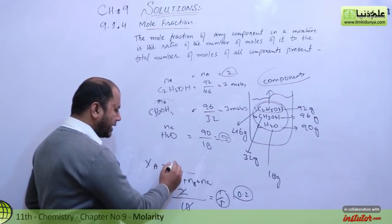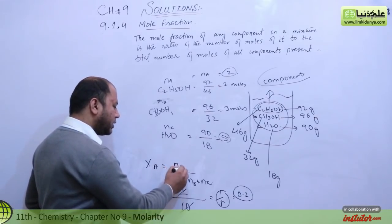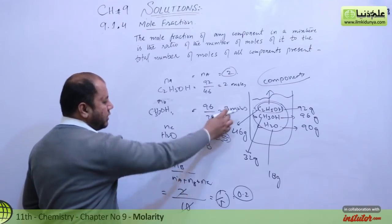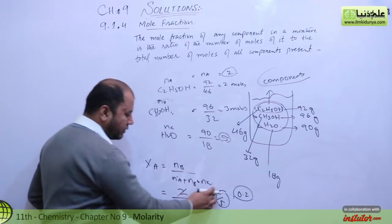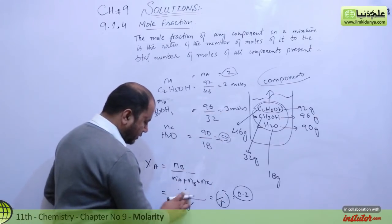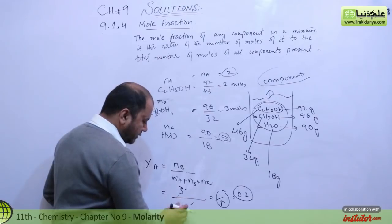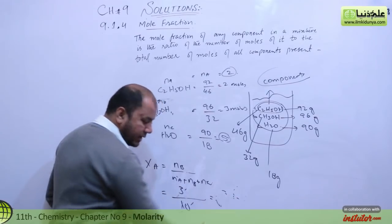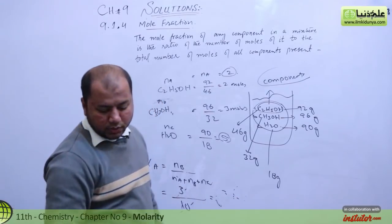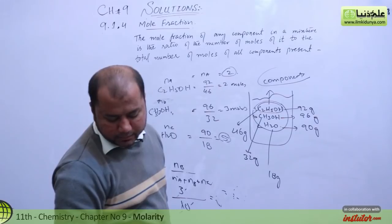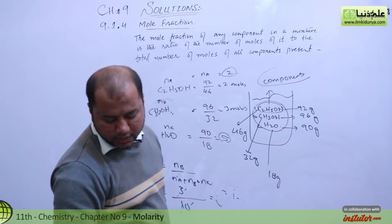In the same way you calculate Xb: moles of B on top is 3, total is 10, so Xb = 3 over 10 = 0.3.